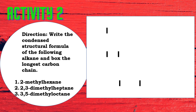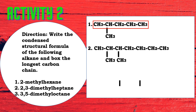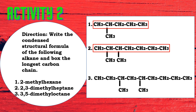For activity number two, the direction is to write the condensed structural formula of the following alkanes and box the longest carbon chain. Number one is 2-methylhexane, number two is 2,3-dimethylheptane, and number three is 3,5-dimethylhexane.